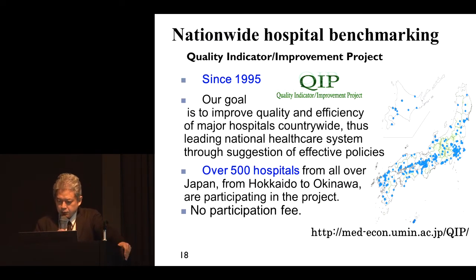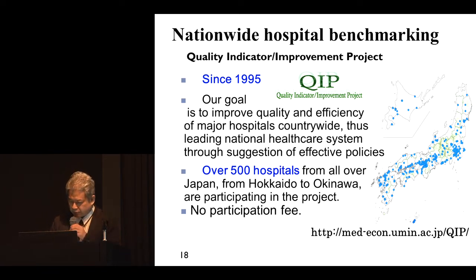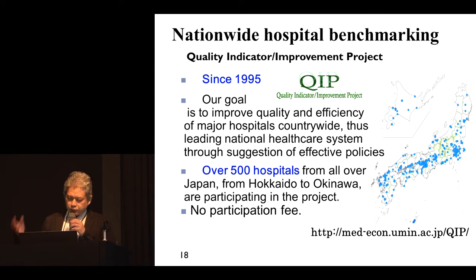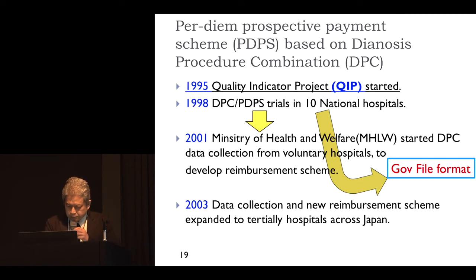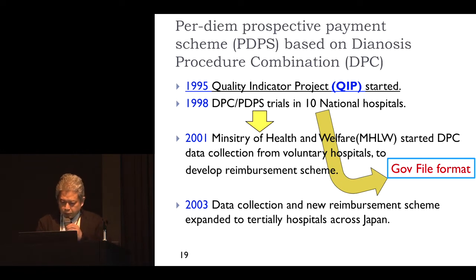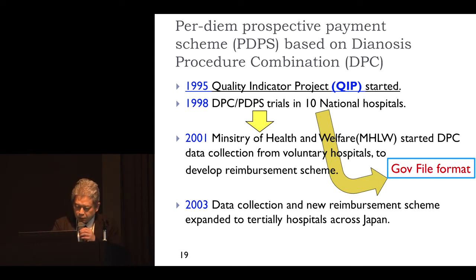We started this benchmarking project 20 years ago with 10 hospitals. Now over 1,500 hospitals have joined our program and send us all anonymous patient data every month. During this benchmarking system, we have provided input to the Ministry of Health and Welfare's healthcare reform process.